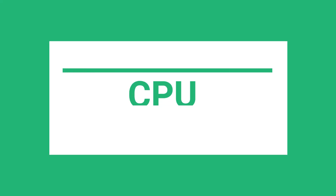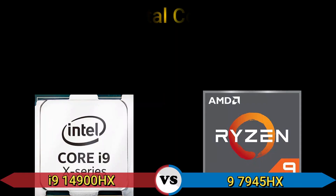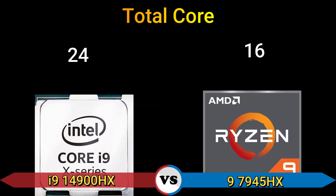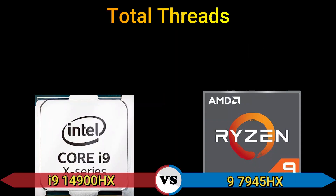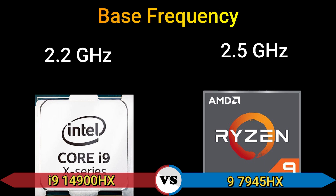Part 2: CPU. Total cores: 24 and 16. Total threads: 32. Base frequency: 2.2 GHz and 2.5 GHz.